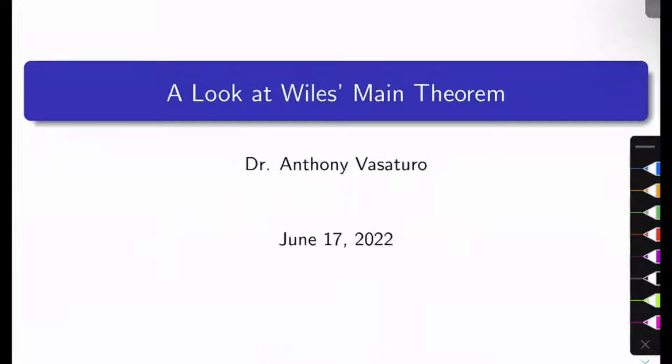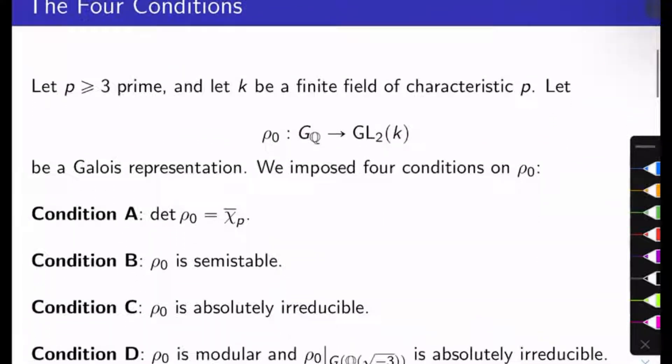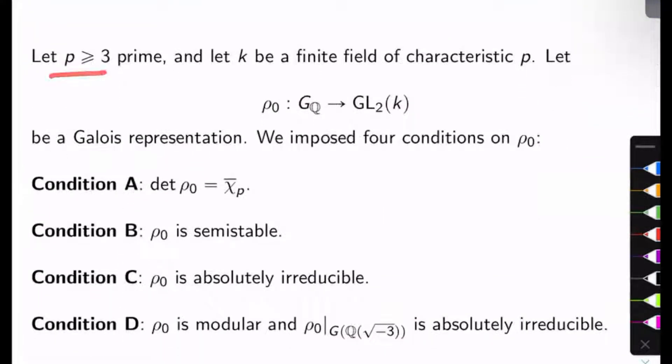Welcome back, everybody. Today we're going to finally have a look at Wiles' main theorem. We'll start by reviewing what we talked about over the past couple of videos. We took a prime P at least 3, a field K of characteristic P (a finite field), and we looked at a Galois representation rho-naught from GQ to GL2K, imposing four conditions on rho-naught.